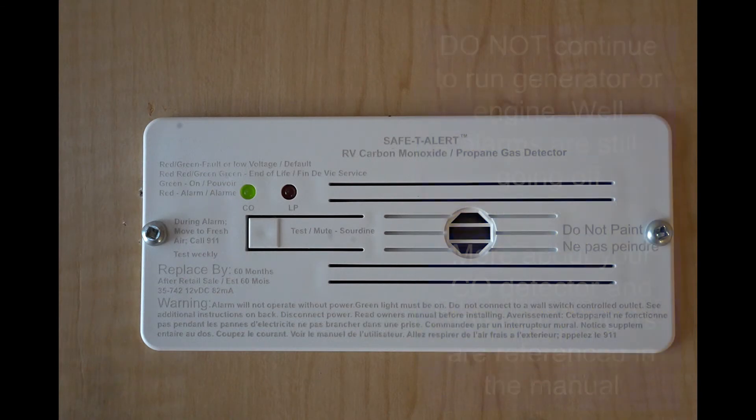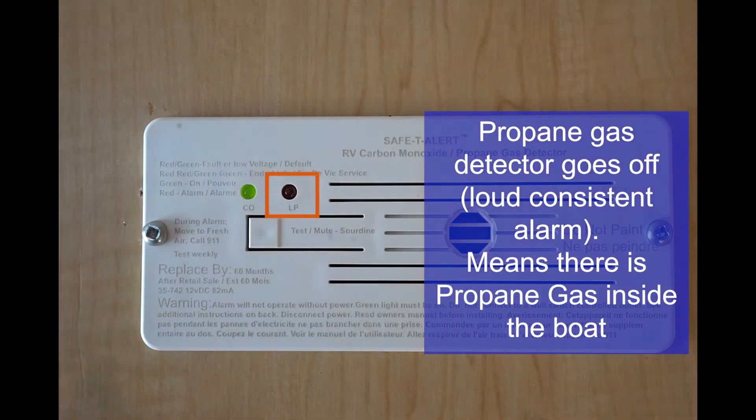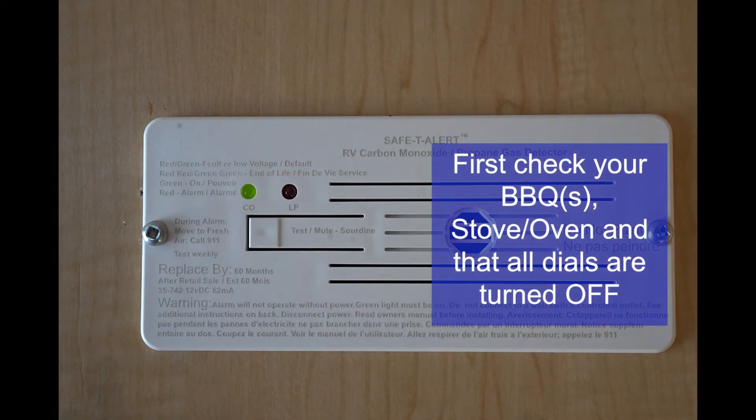Do not just continue running the boat as there are still fumes inside. If the propane gas detector is going off, this light here is going to be flashing. It's a very loud repetitive alarm. It means there's propane gas inside the boat. First things to check are your stove and oven—make sure all the dials are turned off. Check your barbecue on the front deck, or if you have barbecue on the second deck, make sure both those barbecue dials are turned off.